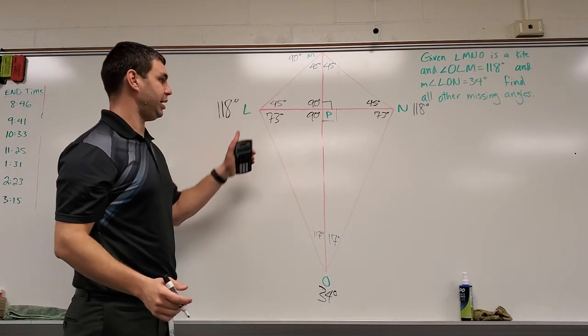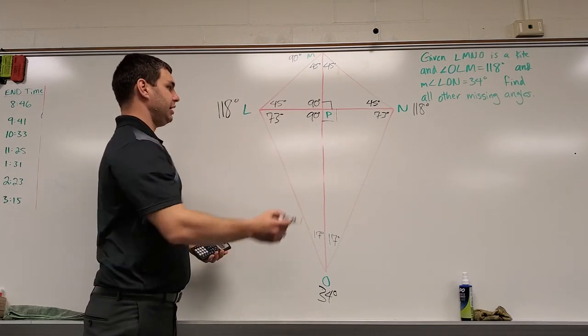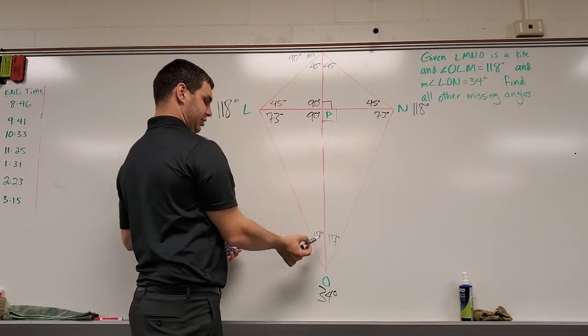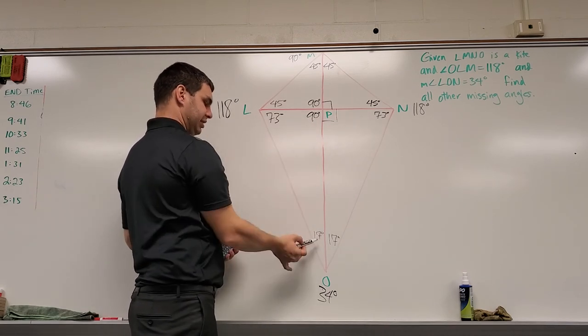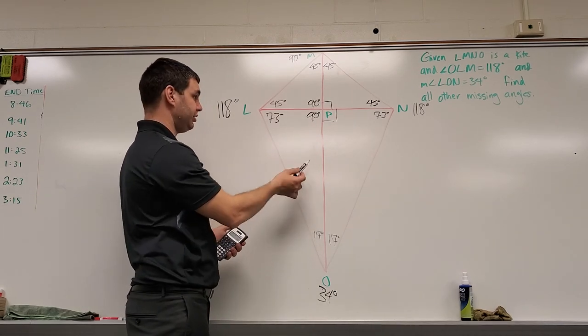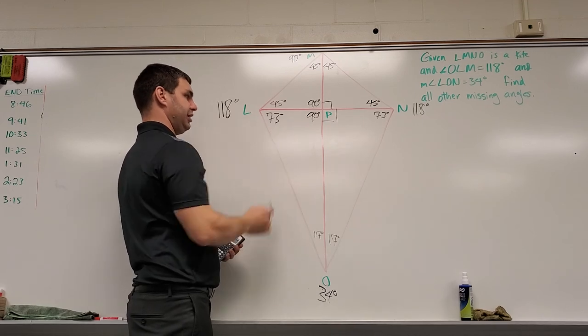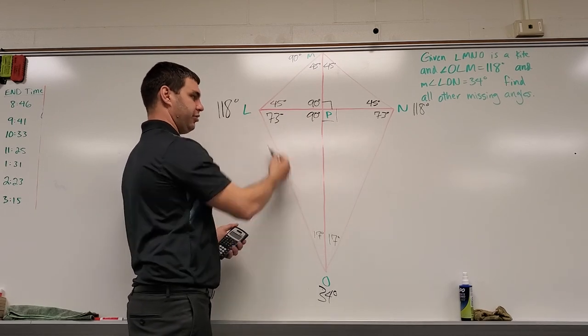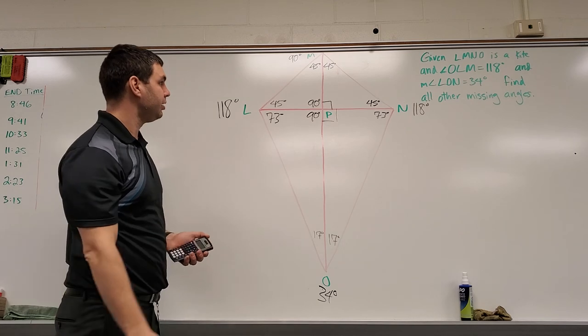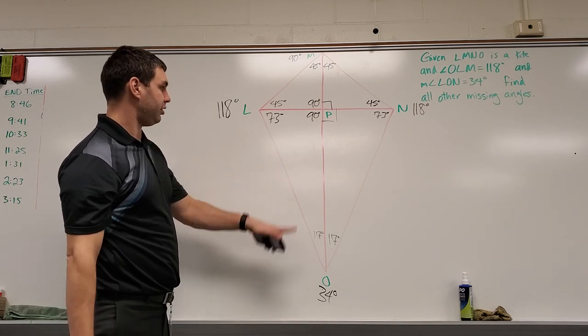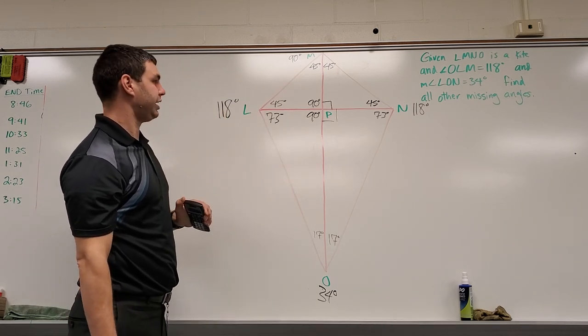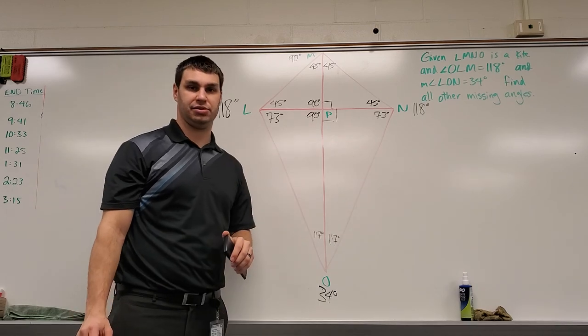Another way you could have found those, if maybe you weren't given the top ones, is now that we know this is 90 and this was 17, I can do 90 plus 17, which is 107. 107 plus 73 would give me 180 for that bottom triangle. All right, it looks like we have all of our angles accounted for, and so this kite is solved.